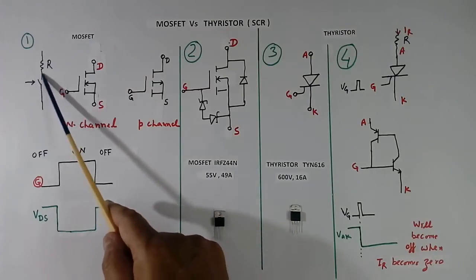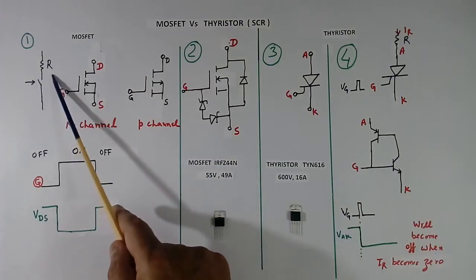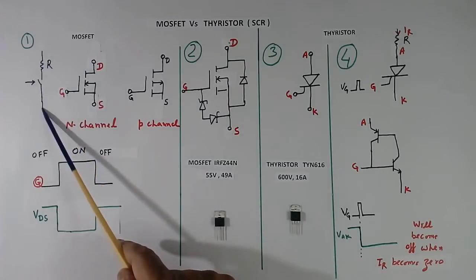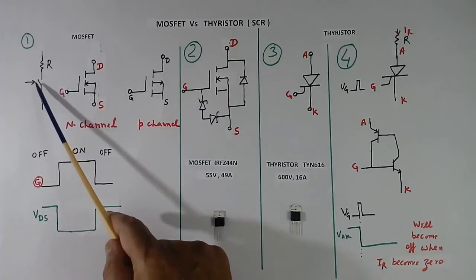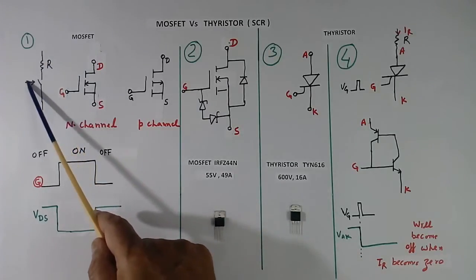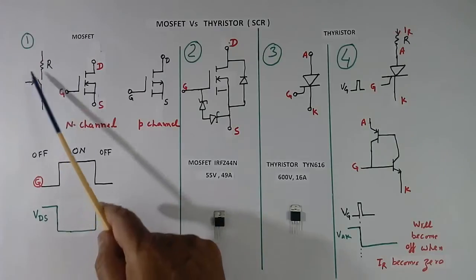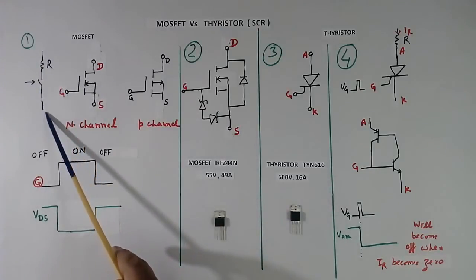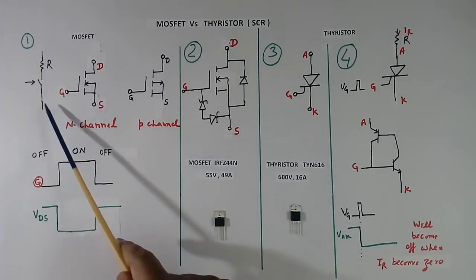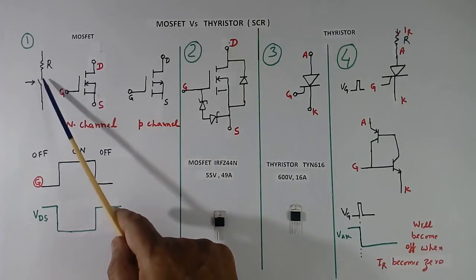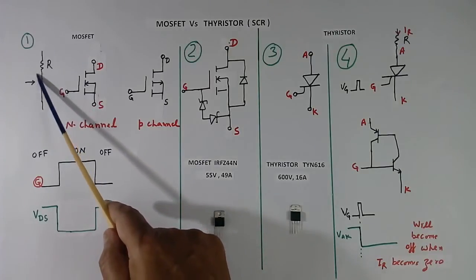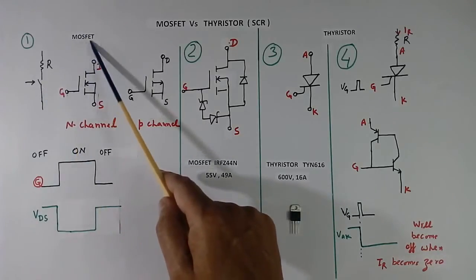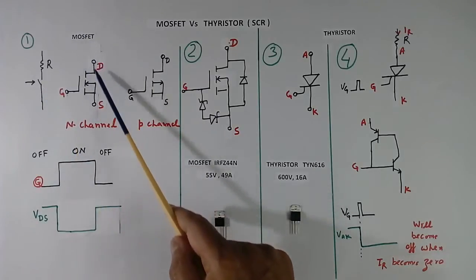Here we have a mechanical switch. If we give supply here, then by making the switch on and off, we can control the current in this. The function of this mechanical switch is done by MOSFET electronically.